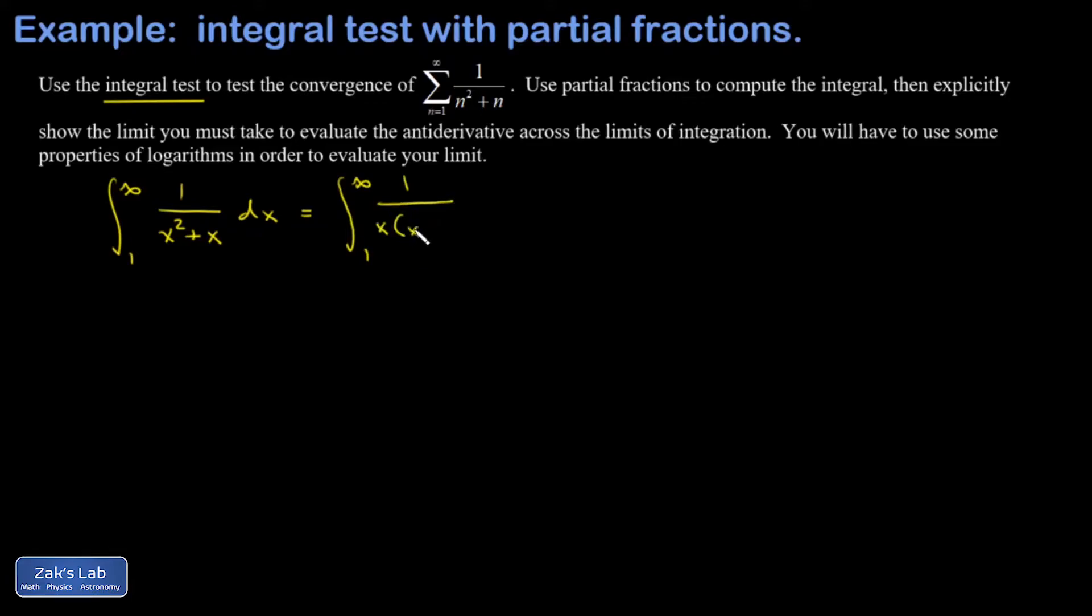So I factor the denominator and then I make a partial fractions proposal. This is just two linear factors, so I just need two pieces in my proposal, each with a constant in the numerator and one of those linear factors in the denominator. I'm going to clear out all the denominators by multiplying by x times x plus one.